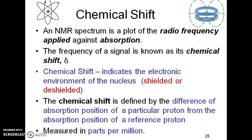The neighbors beside these protons are always different, and that governs the chemical shift — where exactly the proton signal will appear. In NMR, the spectrum is a plot of radio frequency versus absorption, and the frequency of this signal is known as chemical shift, given by delta. Chemical shift indicates the electronic environment of the nucleus. Chemical shift is the difference of the absorption position of a particular proton compared to the absorption position of a reference proton. These delta values or chemical shift values are expressed in parts per million (ppm).